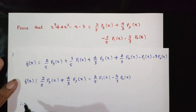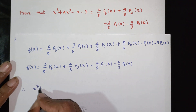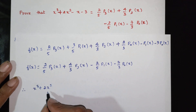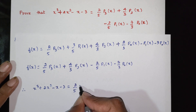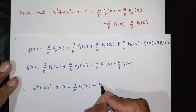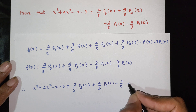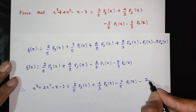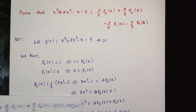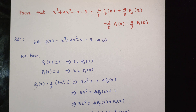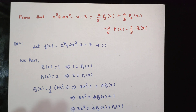Therefore f of x, which is x cube minus 2x square minus x minus 3, is equal to 2 by 5 P3 of x plus 4 by 3 P2 of x minus 2 by 5 P1 of x minus 7 by 3 P0 of x. This is the answer.